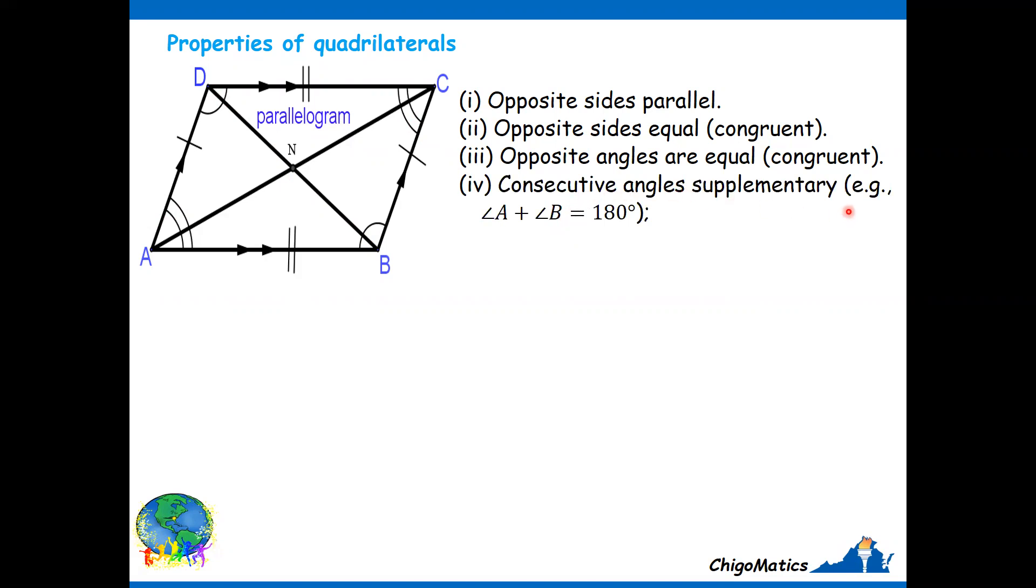Supplementary simply means if you add the two angles, the answer you expect to get is 180 degrees. As an example, angle A plus angle B equals 180. And consecutive means one following the other. Check at A, the next following A is B. At B, the next following B is C. At C, the next following C is D, and so on and so forth.